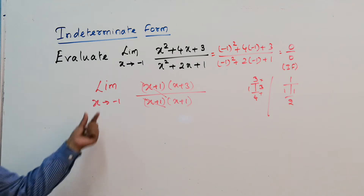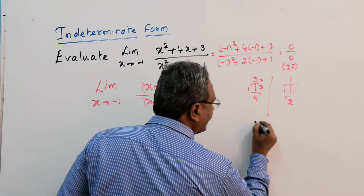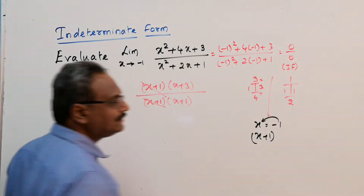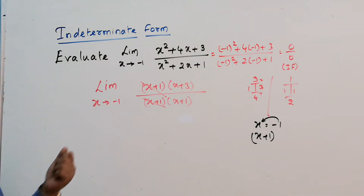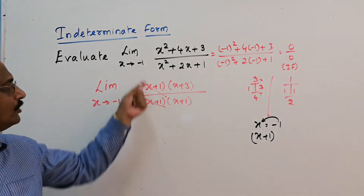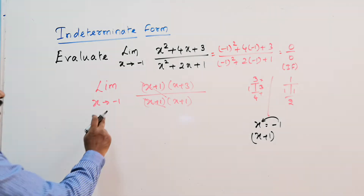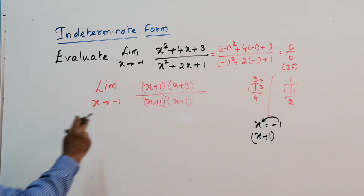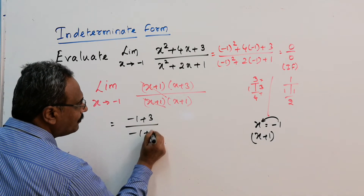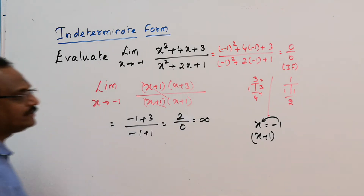Always remember: when identifying factors, check where the limit is approaching. Here x approaches minus 1, so there should be a factor (x plus 1). After canceling the common factor and substituting x equals minus 1, we get (minus 1 plus 3) divided by (minus 1 plus 1), which is 2 divided by 0. Any number divided by 0 is infinity.